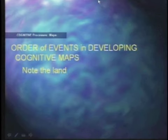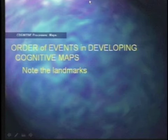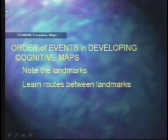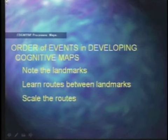The order of events specifically does the following. First, you note the landmarks — how do I get from home to my job? For some of us it's easy, for others it's trial and error. It involves a series of point-to-point navigations, which is the process of experimentation. The second thing we tend to do is learn the routes between the landmarks and then scale the routes appropriately.